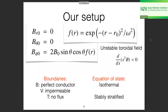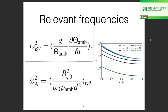The setup I'm going to describe starts from an unstable toroidal field. Since stars and planets all rotate, it's conceivable that there are large toroidal fields, and they might go unstable — this is called the Tayler instability. We choose a profile of a purely toroidal field in an isothermal, stably stratified environment, with perfect-conductor boundaries for magnetic fields, impermeable boundaries for velocity, and no thermal flux outside.